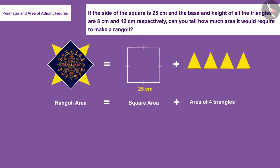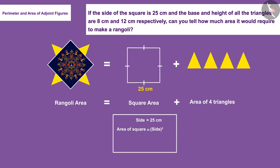So let's find the area of the square. The area of a square is the square of a side. Since all sides are equal and the side measures 25 centimeters, the area of the square will be 625 square centimeters.